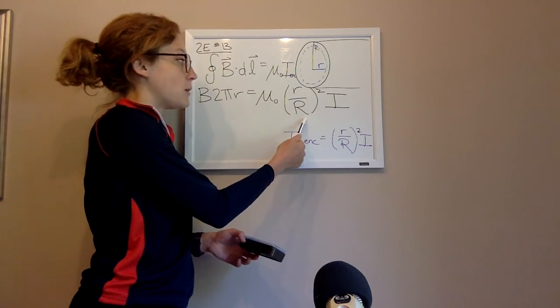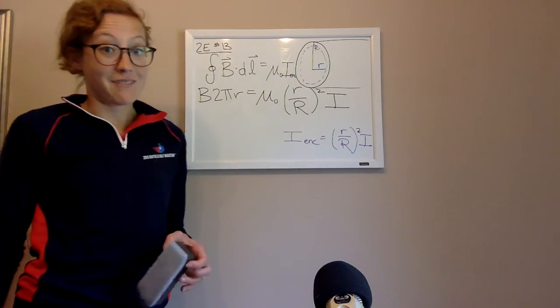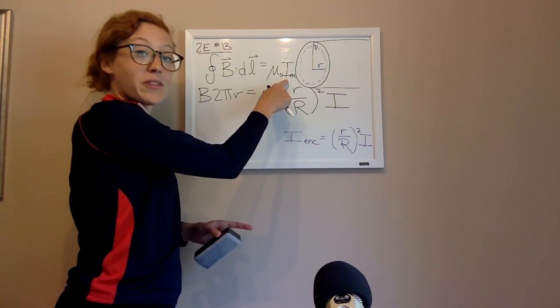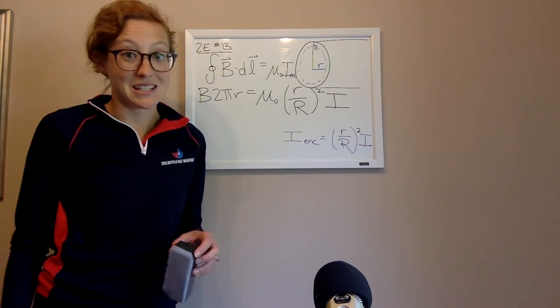Because we literally have all of the things we're looking for except B. We have little r, we know big R, we have mu naught, of course, and we have I. So the trick with this problem is really figuring out what that I enclosed is, and then the rest of it's easy.